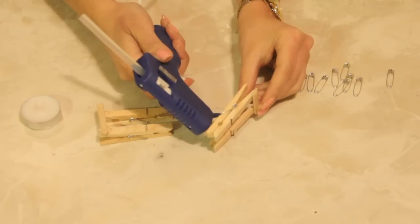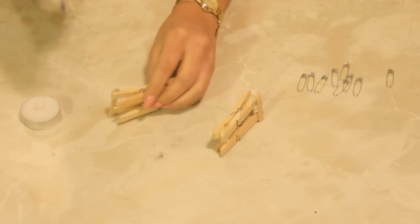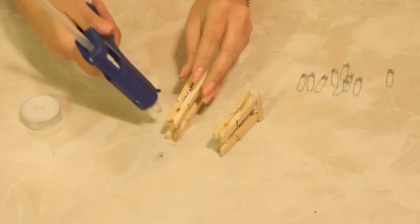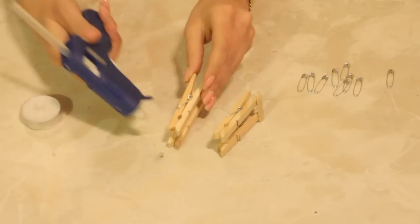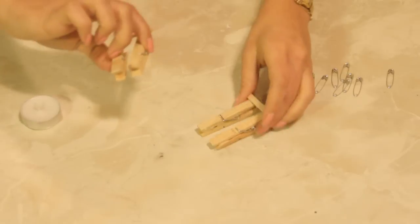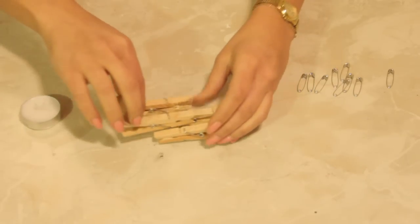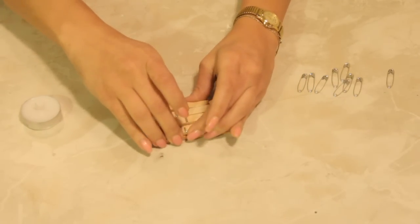Now you are going to take your glue gun and you are going to glue in on the inner sides of your clothespins. This is going to stick them together so that it's a nice sturdy foundation for your candles.